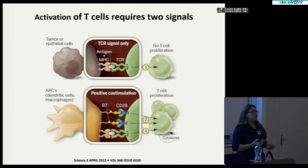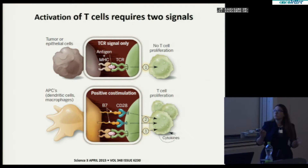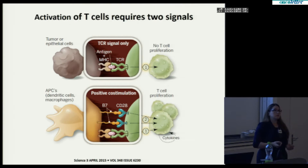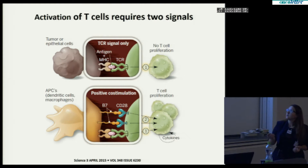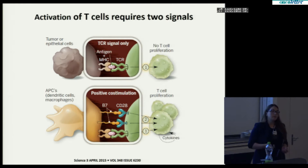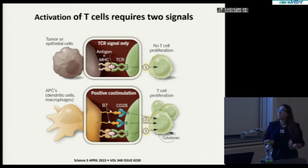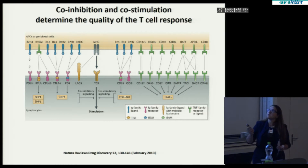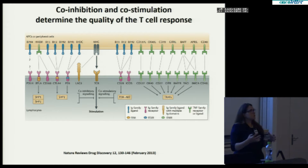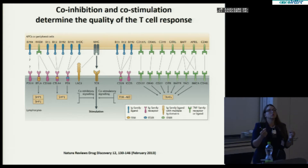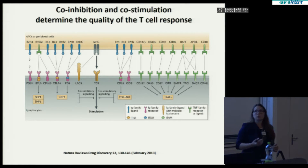We know that T-cell activation needs to see an antigen in the presence of antigen presenting cells, but also needs a stimulatory pathway to be activated, and this is with B7-1 and B7-2 molecules interacting with CD28. This is not the only molecule fundamental in the activation of T-cells. There are several others which can be characterized as inhibitory molecules or stimulatory molecules, and these are there not just to be a target for treatments, but they are there physiologically to finally tune the T-cell response and the immune responses in general.